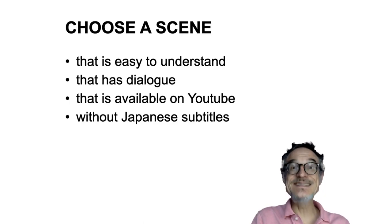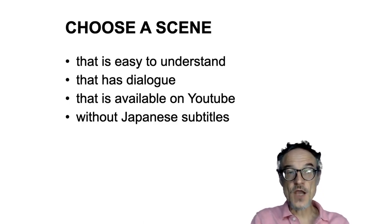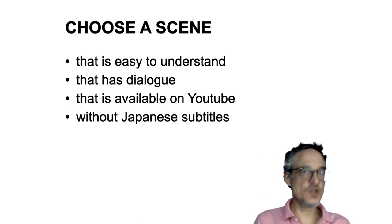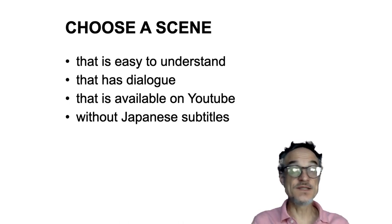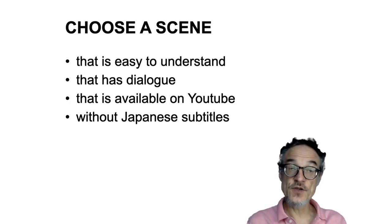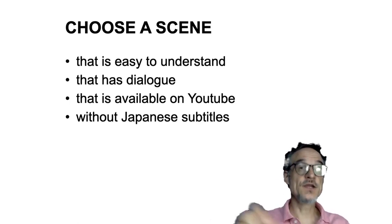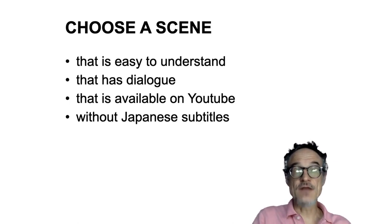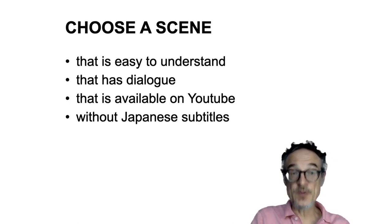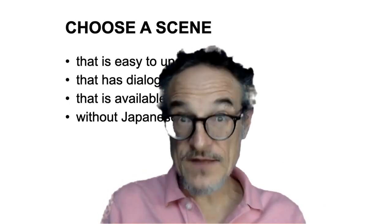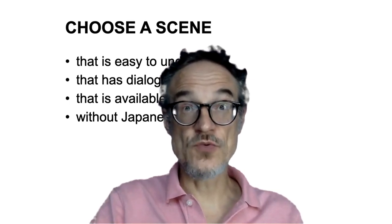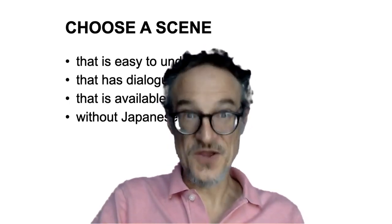Try and choose a scene that's easy to understand and has dialogue. Remember, we're trying to learn English, to acquire English, so we do need to listen to people talking to each other. It may help a lot if you can choose a scene that's available on YouTube, so we can put a link and it's easy for people to watch the scene — and available on YouTube without Japanese subtitles, please. This means you're going to have to search in English. Remember rule number one: use English.